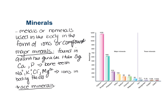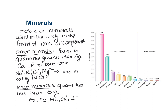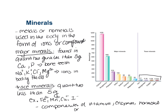Then we have trace minerals, found in quantities less than five grams. Examples include iron, manganese, copper, and iodine. These tend to be components of vitamins, enzymes, hormones, or specialized proteins.